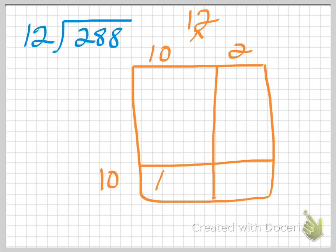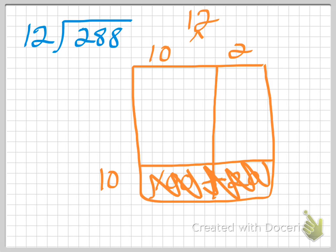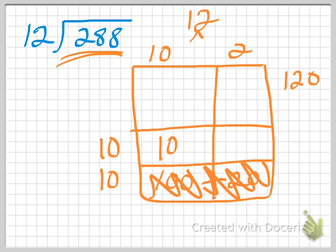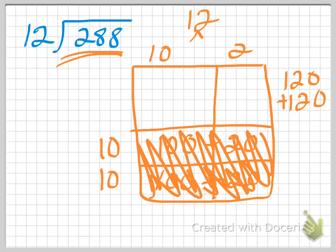10 times 10 is 100. 10 times 2 is 20. I add these numbers up — this is the area I know so far for this section. 100 plus 20 is 120. I need to get to 288, so I'm not quite there yet. Let's do another 10. That equals 100 again, and 10 times 2 is 20. 100 plus 20 is 120. Adding it all together: 120 plus 120 is 240. I'm getting closer.